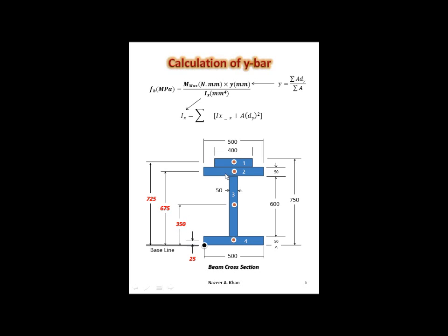For shape number 2, half of the height is 25, plus 600, plus 50, gives me 675. For shape number 1, I go all the way to the top — the whole height of the cross-section — and subtract half the height of shape 1, which is 25, giving me 625. So I have all of my dy's.